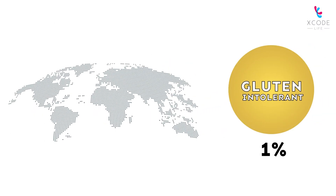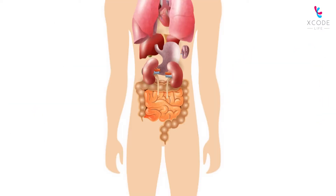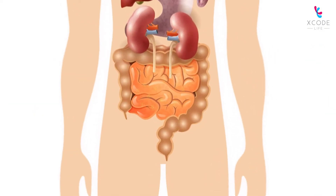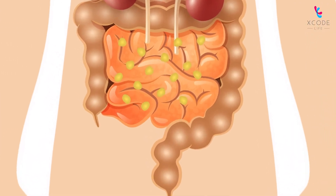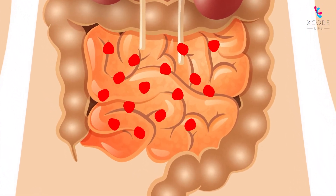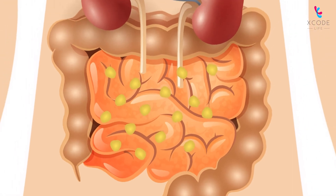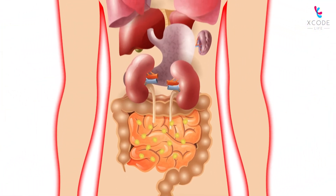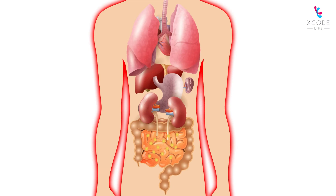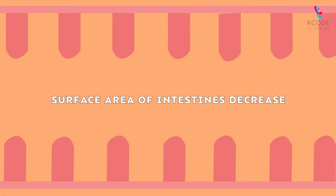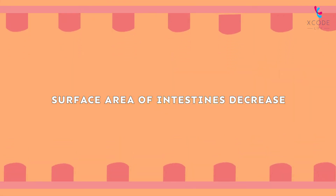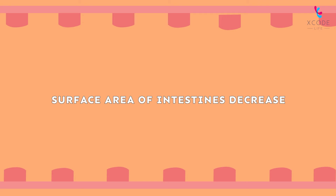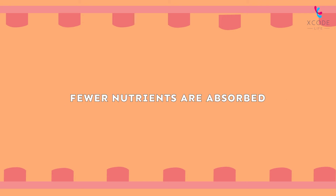Around one percent of the world's population is gluten intolerant, which happens when the body perceives gluten as an enemy and initiates an immune response against it. Upon consumption of gluten, gluten intolerant people may experience severe symptoms. The surface area of the intestine reduces due to the reaction triggered by gluten, and as a result fewer nutrients are absorbed.